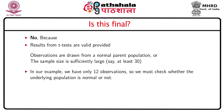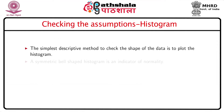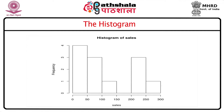So we must check whether the underlying population is normal or not. We use simple descriptive techniques — for example, a histogram, which is the simplest descriptive method to check the shape of the data. A symmetric bell-shaped histogram is an indicator of normality. When we plot the histogram, we find that it is not symmetric and not bell-shaped. The histogram looks like a U-shaped curve, so this data is far from normality.